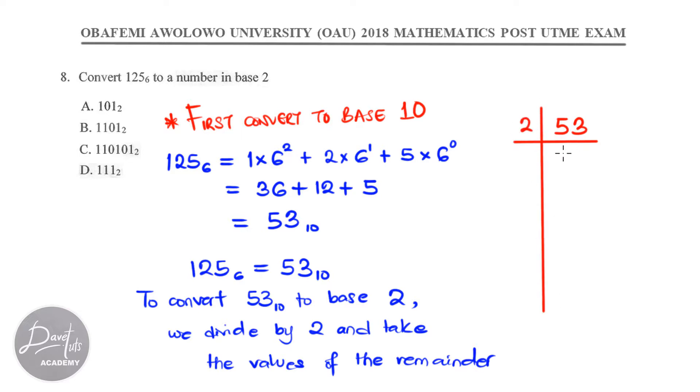So, we have 2 in 53, 2 in 5 is 2, remaining 1, 2 in 13 is 6, remaining 1. So, we have plus 1. 2 in 26, 2 in 26 is 13 and there is no remainder. So, we have plus 0. 2 in 13 is 6, 2 times 6 is 12. So, we have 1 as our remainder. 2 in 6 is 3 and there is no remainder.